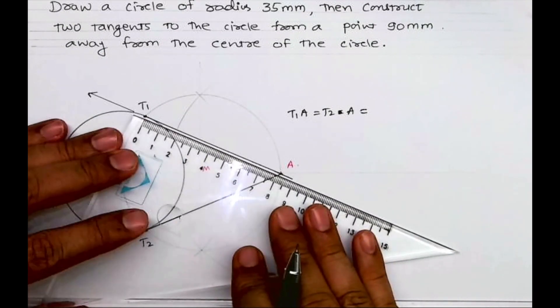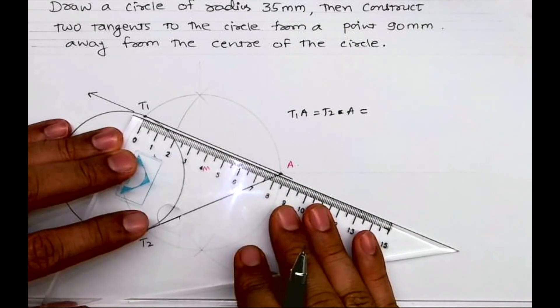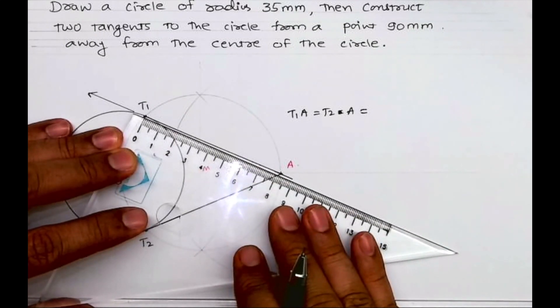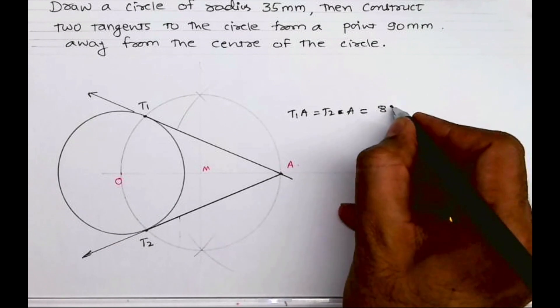T1A equals to T2A equals to 83mm. I hope everyone understood this. Thank you.